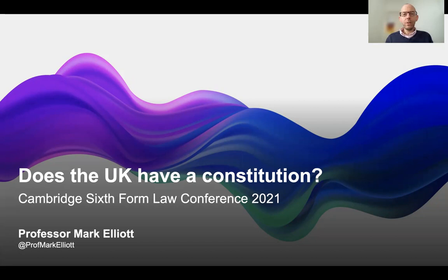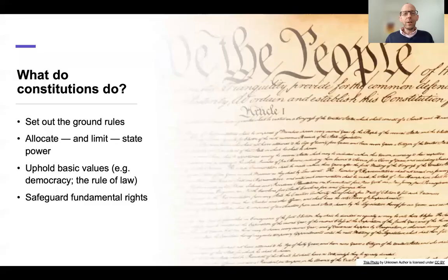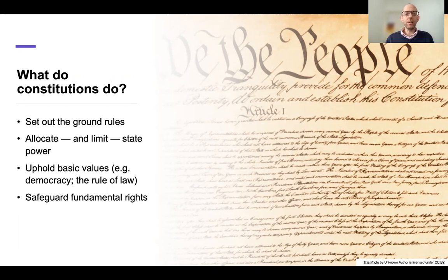Importantly, how is it different from the kinds of things that we might think about when we think about a constitution? So let's think about what constitutions actually do. There are many different jobs that a constitution does, but essentially what they do is to lay down the ground rules for how a country works. The constitution provides an opportunity for the people of a country, at least in a democracy, to say here is how we want to be governed, how we want to organise our society, our system of government, and our system of law.